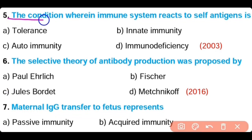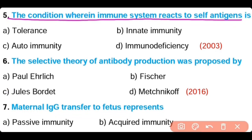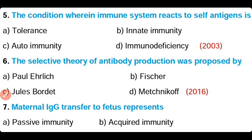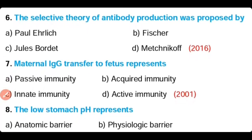Question number 5. The condition where the immune system reacts to the self-antigen is known as: tolerance, innate immunity, autoimmunity, or immunodeficiency. The correct answer is Option C. When the immune system reacts to the self-antigen, it is known as autoimmunity.